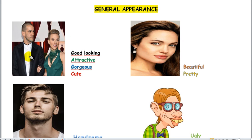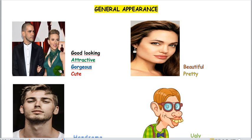As you can see in this picture, this woman is Scarlett Johansson, a very famous actress. And this is her boyfriend. So they are good-looking, attractive, gorgeous, or cute. These four adjectives can be used for both women and men. We can say: she's good-looking, he's good-looking; she's attractive, he's attractive; she's gorgeous, he's gorgeous; she's cute, he's cute.